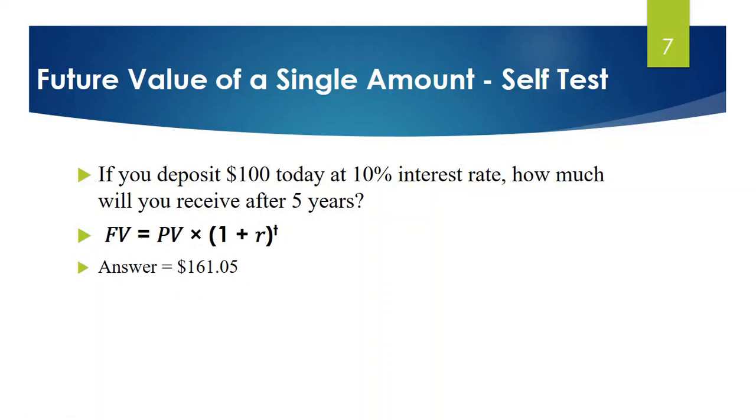Now if you apply simple interest rate, what will be your future value? In case of simple interest rate, you will receive $10 interest every year, that's $100 into 10%. Over 5 years, you will receive $50 interest. So after 5 years, in total you will receive $100 plus $50, that's $150.